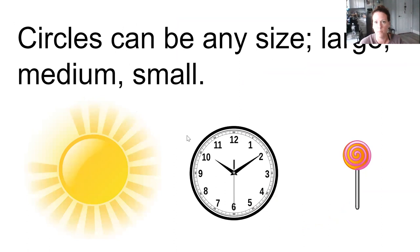They can be any size - large, medium, small. When I think of large, I think of the Sun. I could think of wheels on big trucks. The face of a clock is a circle. A plate is a circle. The top of a cup is the shape of a circle, and lollipops. They can also be any color.